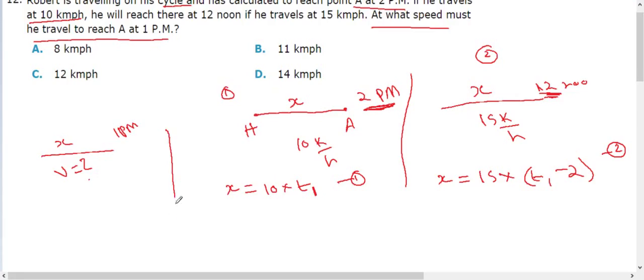Now, distance is the same x, velocity is V. Time is 1 PM and 2 PM, so 1 PM is T1 minus 1.